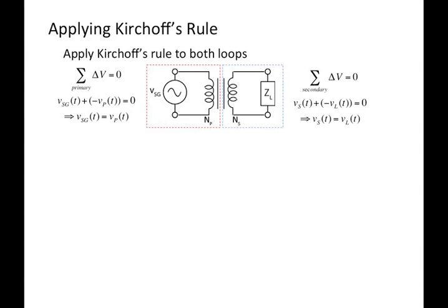What are we trying to do? We're typically trying to find the current through the primary or through the secondary, so we can find the voltages and the voltage across the load. We can apply Ohm's Law to the primary: the signal generator voltage equals the current through the primary times the impedance of the primary.